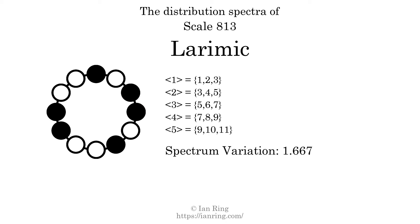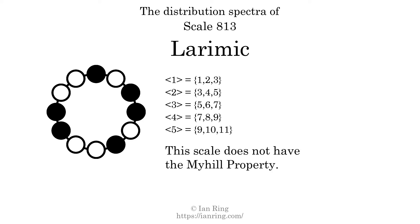The spectrum variation is the sum of all the widths divided by the number of tones. The spectrum variation of this scale is 1.667. Since the variation is greater than 0, this indicates that the scale is not perfectly even. The highest spectrum width is 2; since this is greater than 1, we know this scale is not maximally even. If every spectrum has exactly 2 specific intervals, we call that the Myhill property. This scale does not have the Myhill property. Since the generic interval ranges do not overlap, this scale is proper, but it is not strictly proper because some specific intervals appear in more than one spectrum.